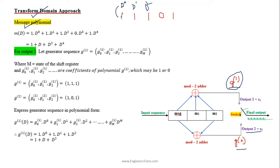We multiply the input stream with the delay variable d, where each bit position corresponds to d-power-0, d-power-1, and so on. Here d is known as the delay variable. For the message signal 11101, we get the message polynomial as 1 + d + d² + d⁴.